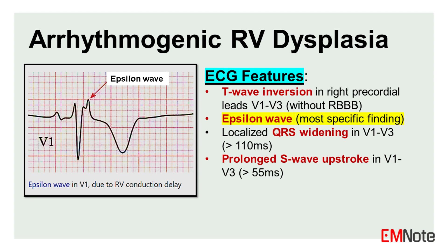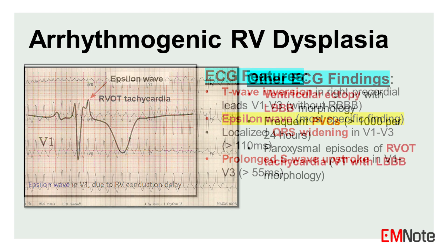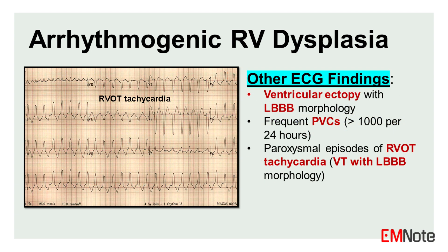Epsilon wave is a highly specific finding for ARVD. Ventricular ectopy with a left bundle branch block morphology and episodes of sustained ventricular tachycardia with LBBB morphology, known as right ventricular outflow tract tachycardia, are also characteristic.